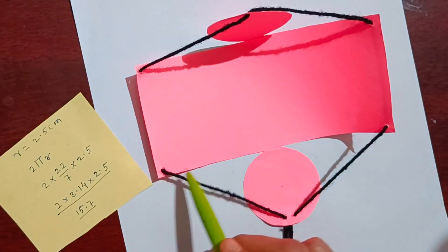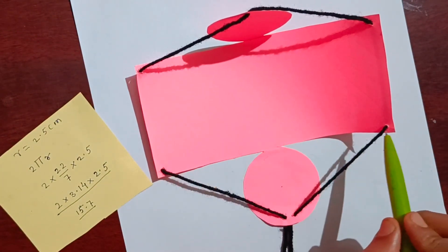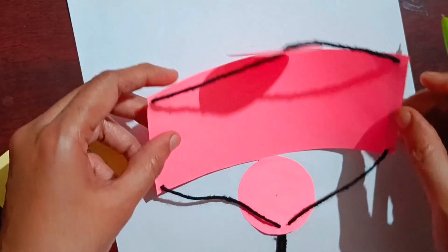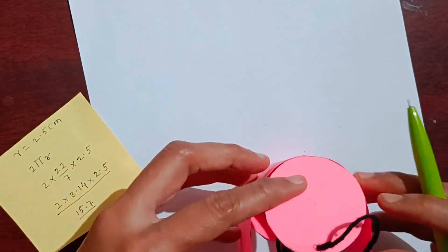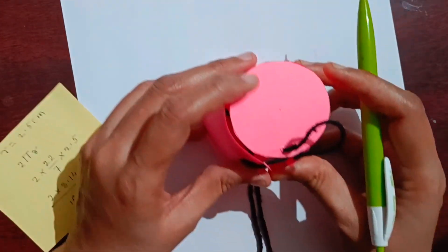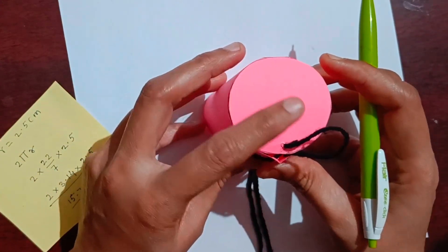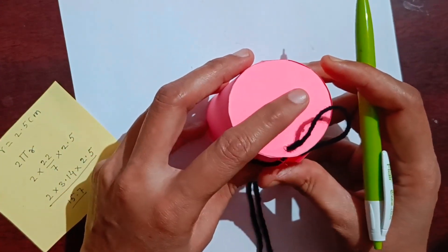So why do we have to take this length 15.7 cm? Because we have to cover, we have to make this perfect measurement like this. This circle should fit in this circle.